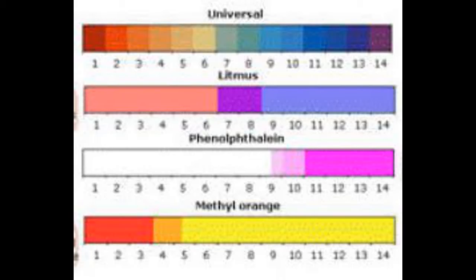Blue litmus paper in neutral will have no change. Blue litmus paper in acid will turn red, whereas red litmus paper will stay red. Blue litmus paper in alkali will stay blue, whereas red litmus paper in alkali will go blue.